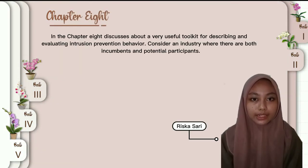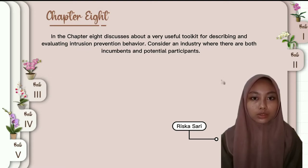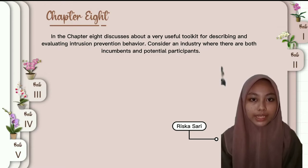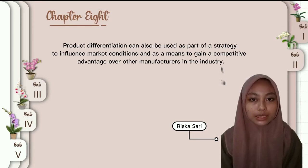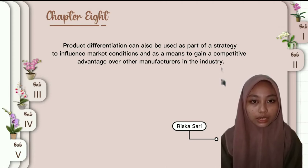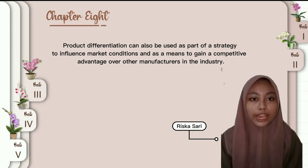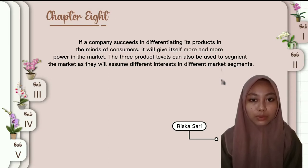In chapter 8, the discussion is about a very useful toolkit for describing and evaluating strategies for competitive behavior. Consider an industry where there are both incumbent and influential participants. Product differentiation can also be a part of a strategy to influence market conditions and is meant to gain a competitive advantage over other manufacturers in the industry.